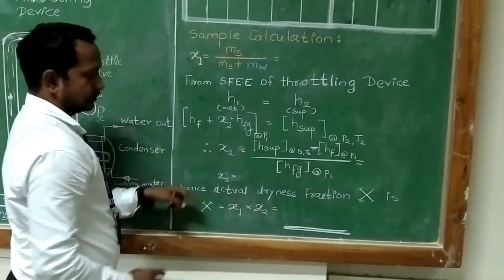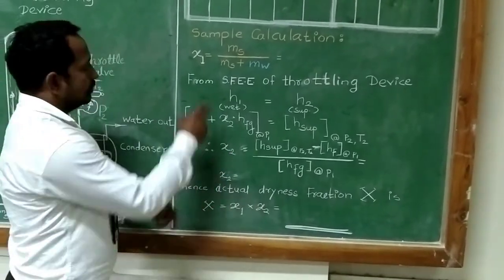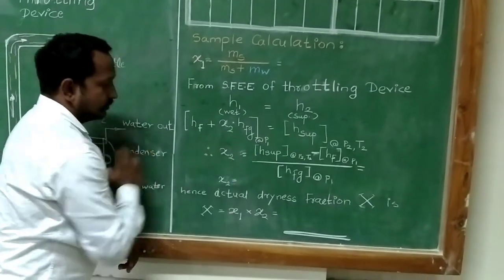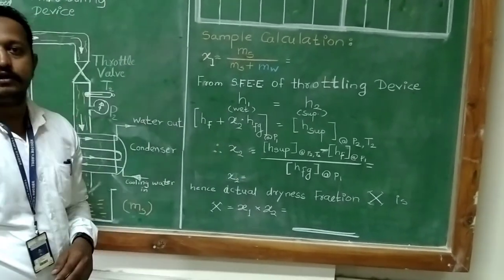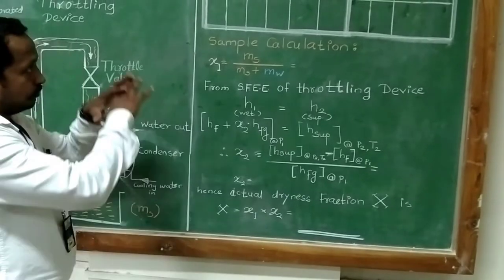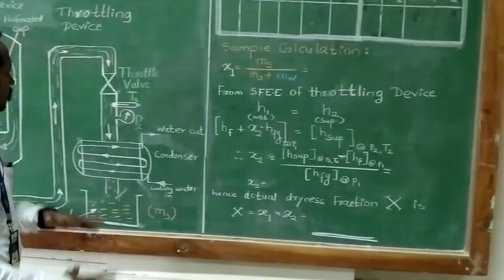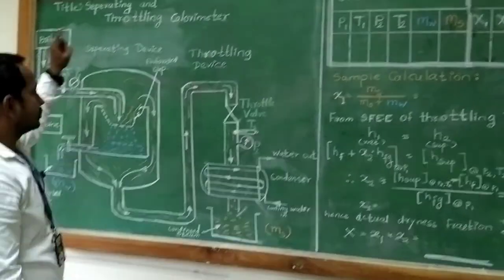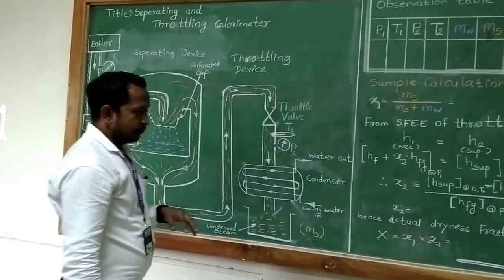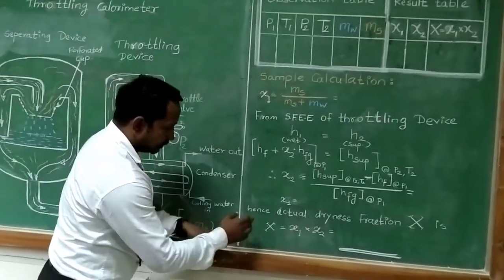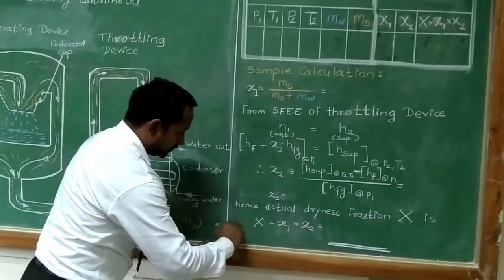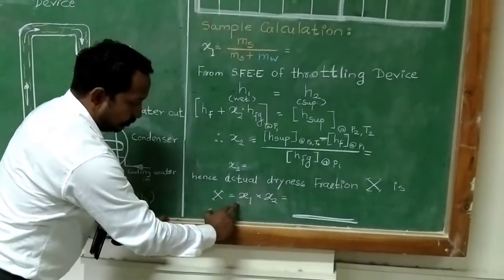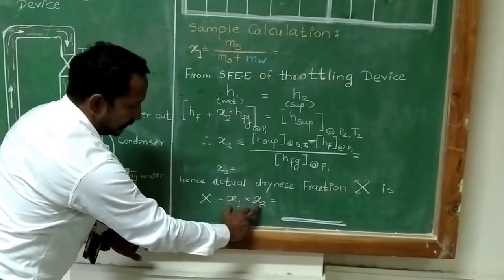So, we are having two different values of dryness fraction: one is according to the separating calorimeter, another is according to the throttling calorimeter. Now, whenever we are using the entire setup as one — that is, the combined separating and throttling calorimeter — the actual dryness fraction x is then: x = x1 × x2.